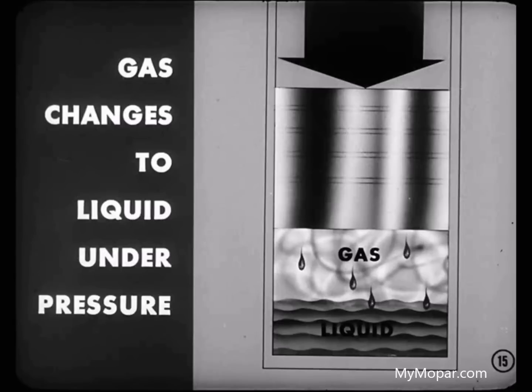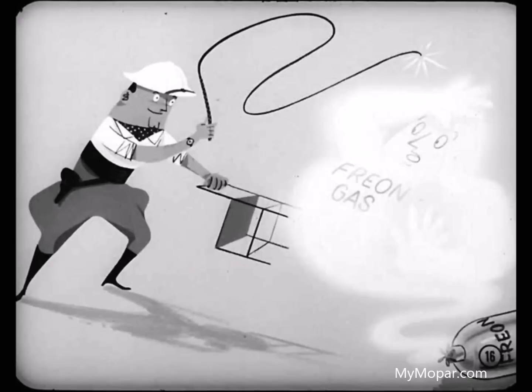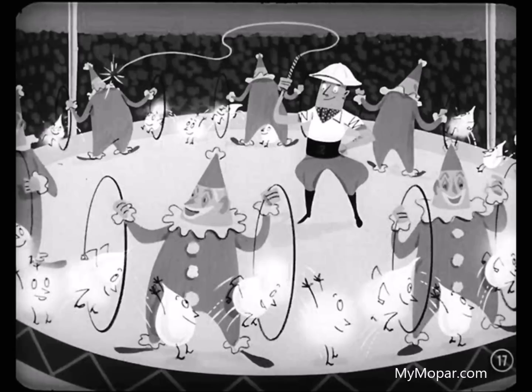Then this Freon is a gas, right? Basically, yes. But you know that any gas can be changed to a liquid if you put it under pressure. And so we put this Freon under pressure so it will behave like we want it to. Is the amount of pressure used important, Lou? Yes, it is, Bill. Pressure is one of the important principles we work with in the operation of the air conditioning system. By varying this pressure, we can cause the Freon to change from a liquid to a gas and back to a liquid when we want it to.